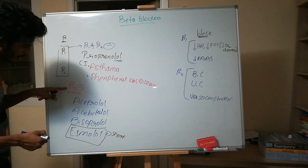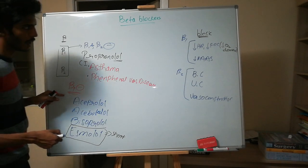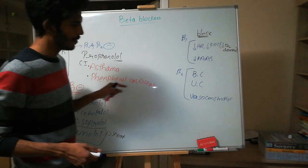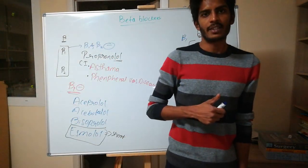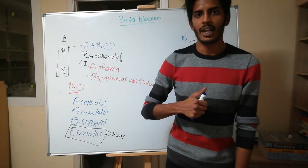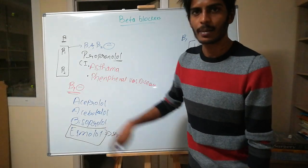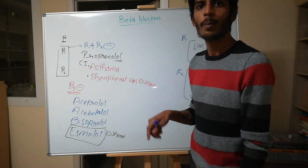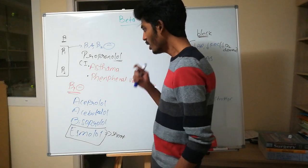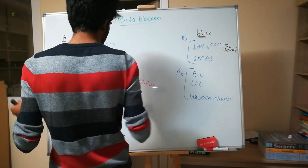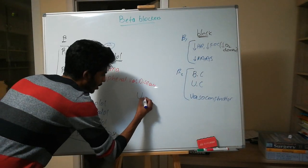These drugs block only beta 1, so their major effect is on the heart. We can call them cardioselective beta blockers — because they are blocking only beta 1 receptors, they are referred to as cardioselective beta blockers.